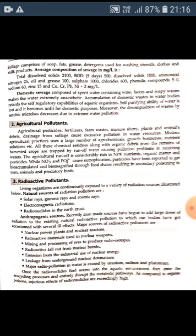Industrial effluents are another source of water pollution. Industrial activities generate a variety of waste products which are generally discharged into water bodies. The nature of industrial waste depends upon the industrial processes in which they have been generated. Pollutants associated with industrial effluents include organic matter, inorganic dissolved salts, suspended solids, fertilizing materials, thermal constituents in the form of heat, microorganisms and pathogens.